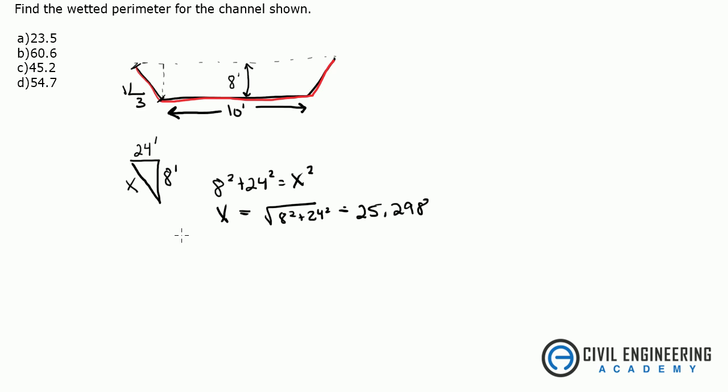And that is that distance. So all you need to do is take 25, this is what your wetted perimeter is going to be, I'm going to call it S, 25.298 times 2, since there's two side slopes, plus 10 feet. And that gives me 60.59 feet. And that is answer B.